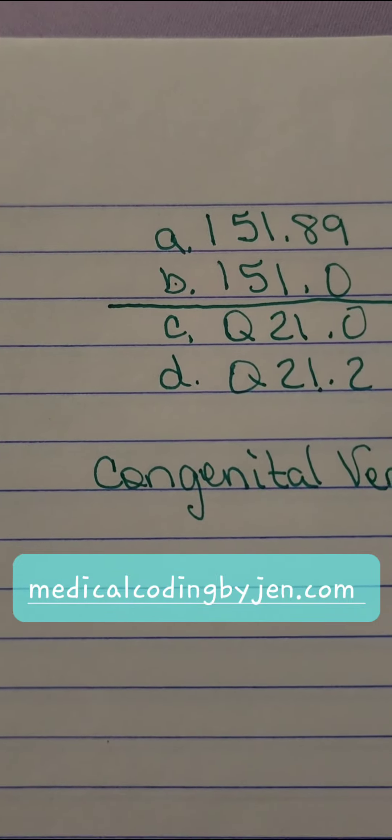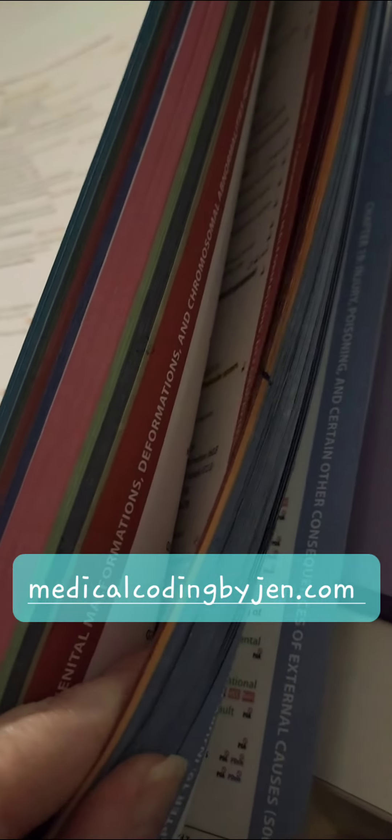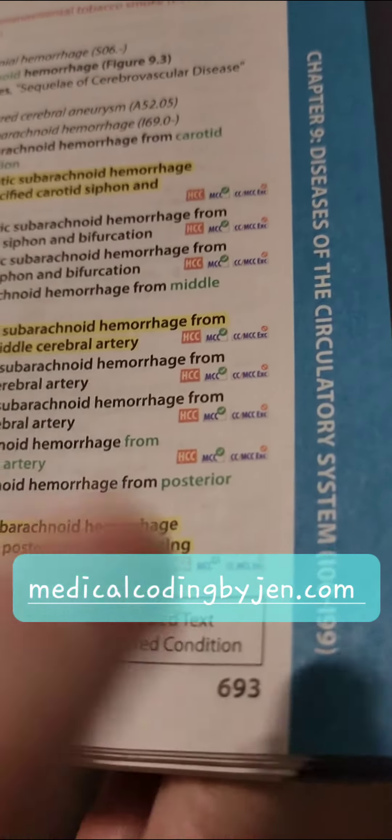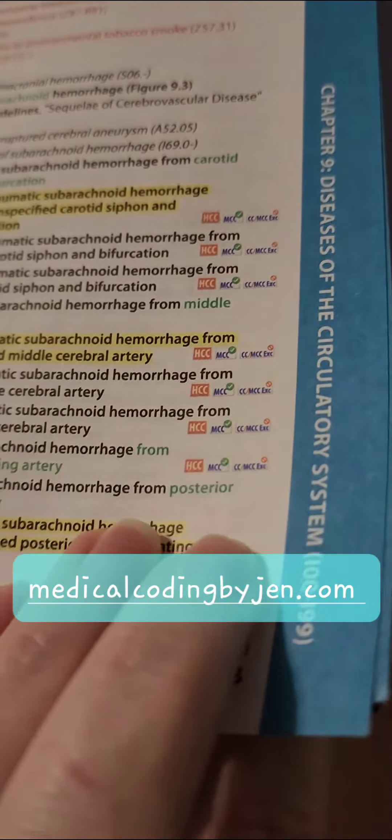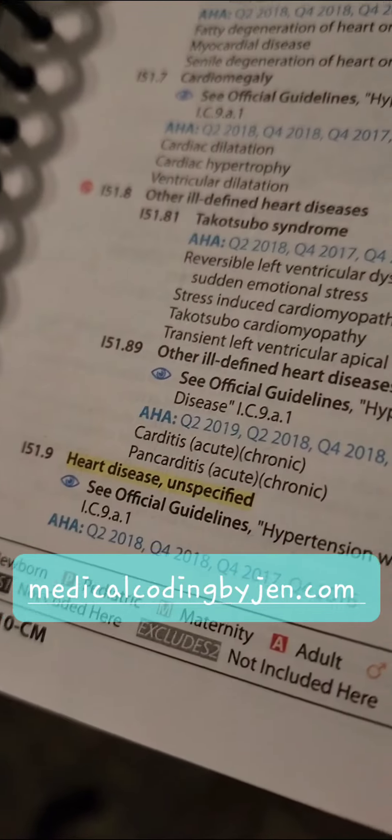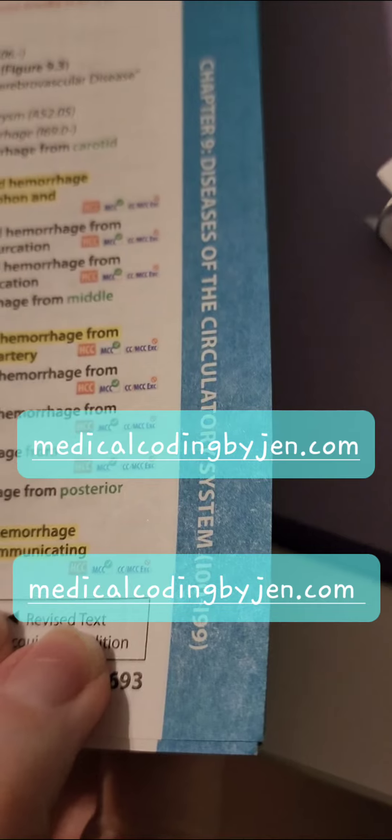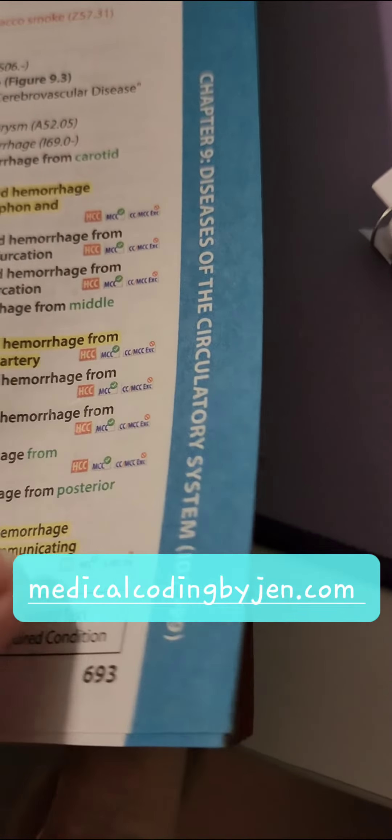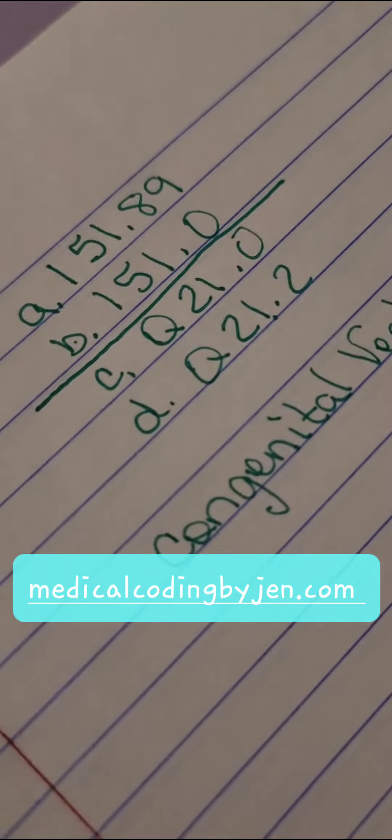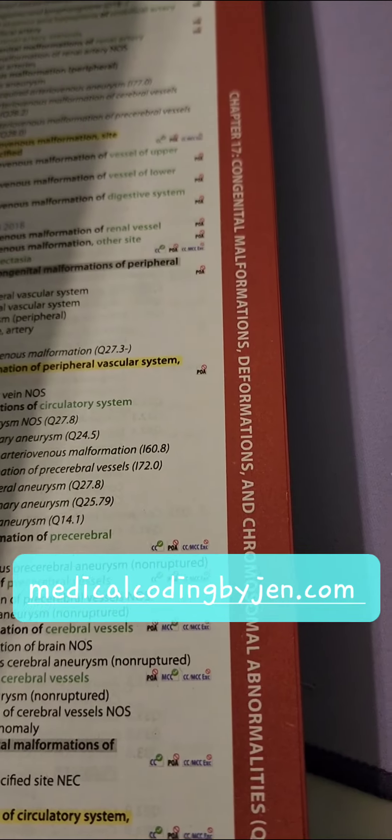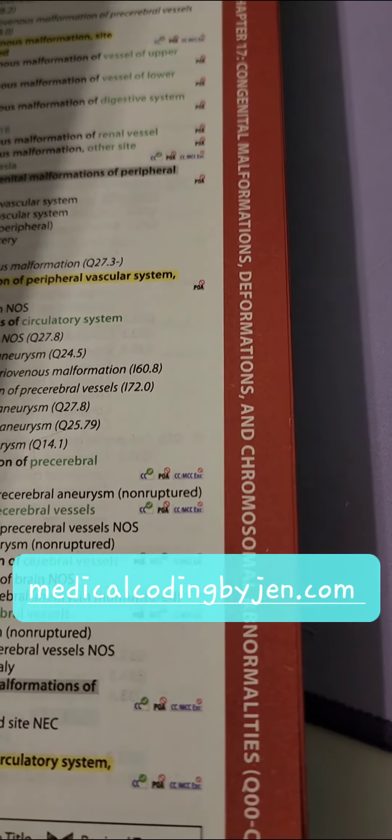And what I mean by sections is your ICD-10 book is divided by all these colors which are sections. So if I was to look up any page from the I section, I-50s, I would look here on the sidebar and see that this section is about the circulatory system and the other section that starts with the Q is about congenital malformations.